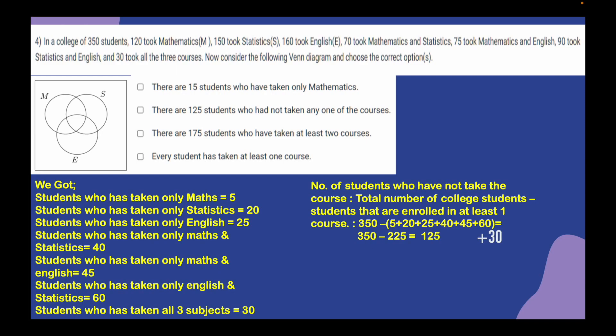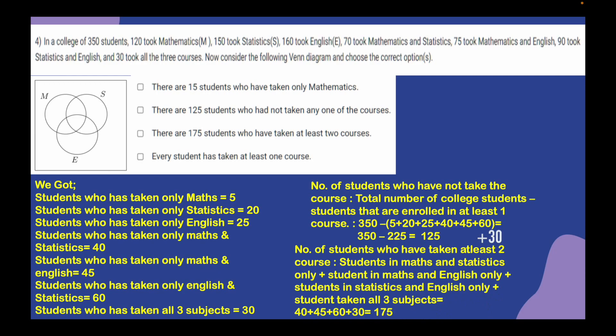This makes option 4 — that every student has taken at least one course — completely false, since 125 students took none of the three courses. Checking option 3: there are 175 students who took at least two courses. We add students in Mathematics and Statistics only, Mathematics and English only, Statistics and English only, and all three subjects: 40 plus 45 plus 60 plus 30 equals 175. So options 2 and 3 are correct. Thank you for watching this video.